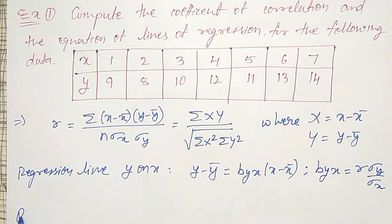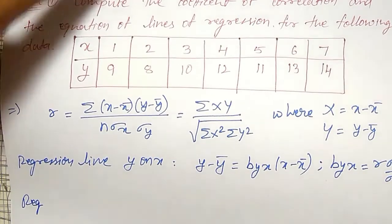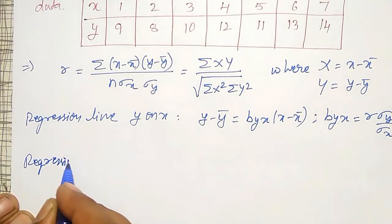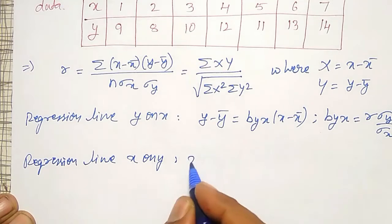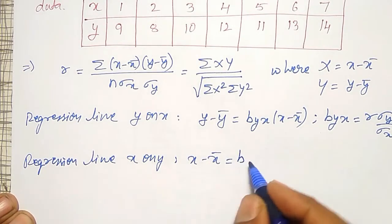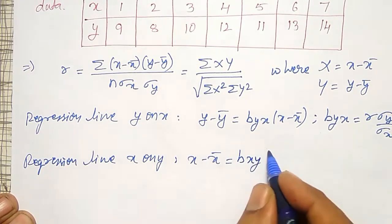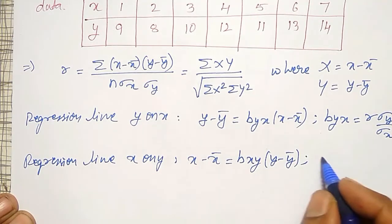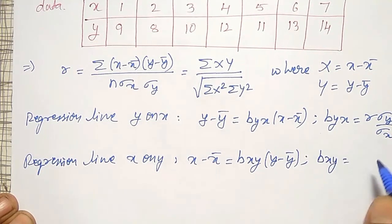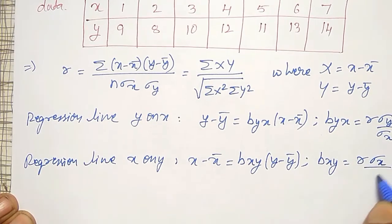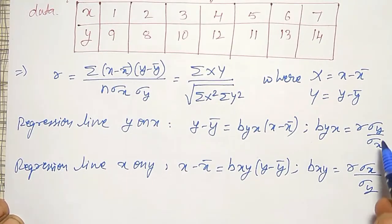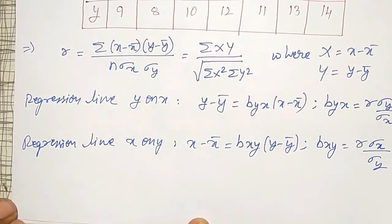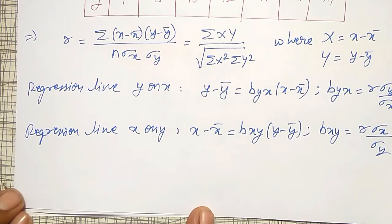Similarly, the regression line X on Y is given by: x minus x̄ = b_xy times (y minus ȳ), where b_xy equals r times σx divided by σy. I will calculate σx and σy, and I will also write the formulas for x̄ and σx, σy here.